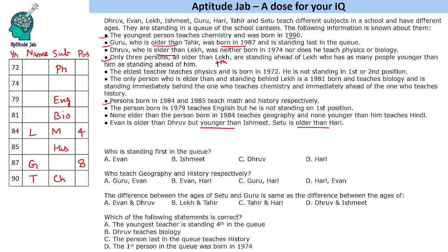None elder than the person born in 1984 teaches geography, and none younger than him teaches Hindi. So no one elder than the 1984 person teaches geography, meaning the 1984 person teaches geography. And none younger than him teaches Hindi, so the person just below him teaches Hindi. Ivan is older than Dhruv but younger than Ishmeet — we'll fill those names later.